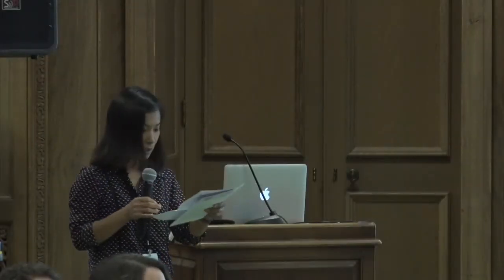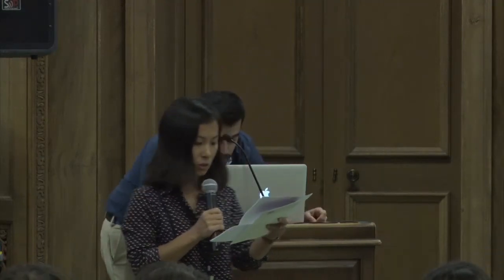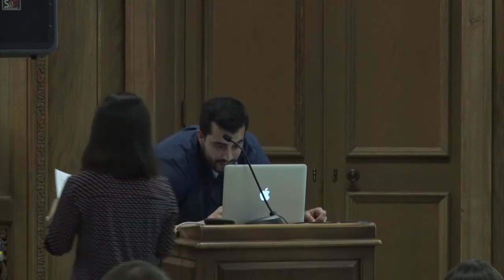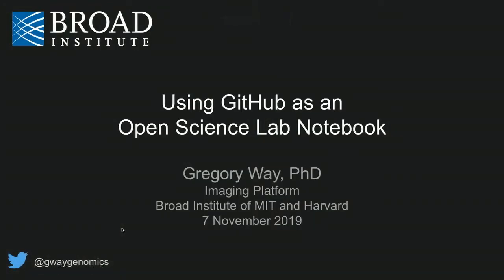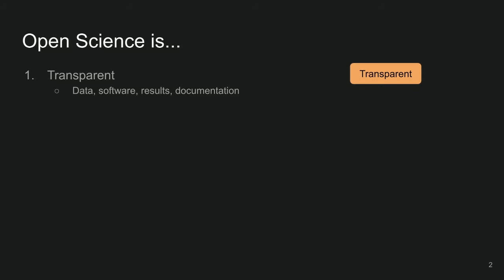Next speaker is Greg Wei, a postdoc associate at the Imaging-Based Profiling Genomics at the Broad Institute of MIT and Harvard. His talk is 'Using GitHub as an Open Science Lab Notebook.' He'll take 15 minutes to talk about how they use GitHub in their lab. Open Science is transparent in the data that's input, the software used, the results output, and documentation about how results are analyzed and interpreted. It's reproducible, with analysis pipelines, computational environments, and documentation. It's also empowering — it increases participation and reuse of your code, increases trust in your science, and speeds the pace of science.